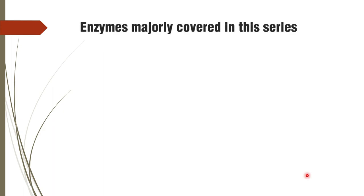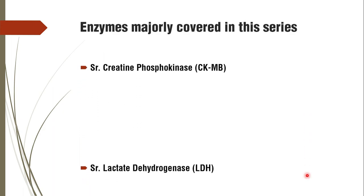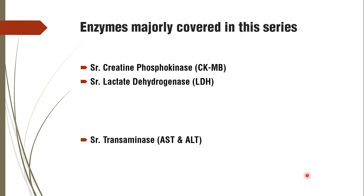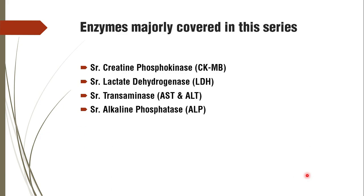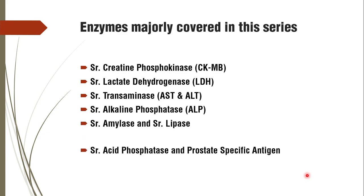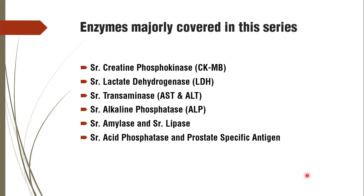The enzymes majorly covered in this series are CK-MB, LDH, both transaminases AST and ALT, alkaline phosphatase, amylase, serum lipase, acid phosphatase, and prostate-specific antigen for prostate pathologies. Along with that, there is also a list of miscellaneous enzymes which are not routinely done.